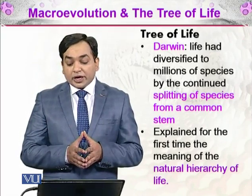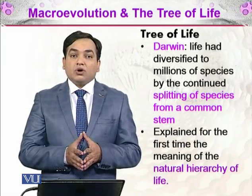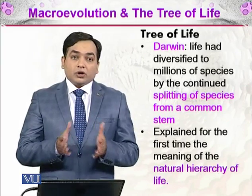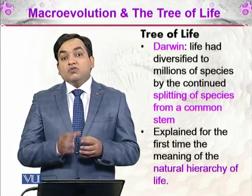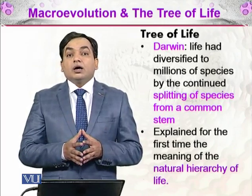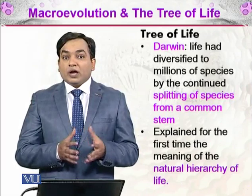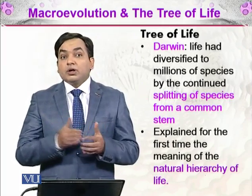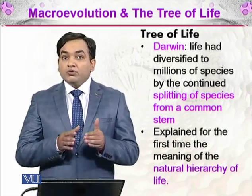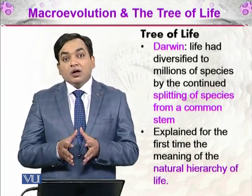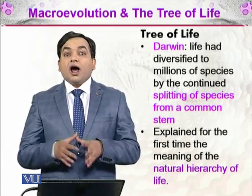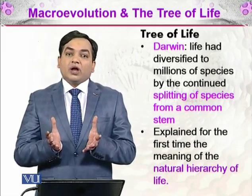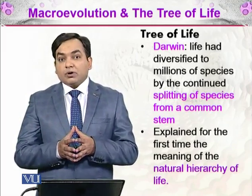Darwin was able to explain for the first time the meanings of the natural hierarchy of life. Earlier, Carlos Linnaeus was the first scientist who devised a hierarchical system of life. He classified organisms based on morphology. Now Darwin was trying to explain the tree of life — not only the physical forms, but also how an organism reached that form, and how the whole tree of life assembles through the process of evolution.